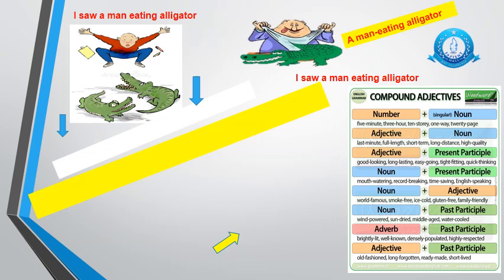Let's have a little look at something else now. Read the sentences in front of you: I saw a man eating alligator. They're exactly the same. The only way I know that they might mean different things is because of the pictures — one picture has the alligator trying to eat the man, and in the other picture there's a man eating the alligator. This is how sentences can be confusing when you use two words to describe a noun without a hyphen in the middle. A hyphen is a punctuation mark, and without it, confusion develops.